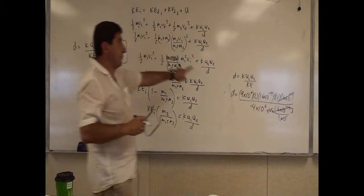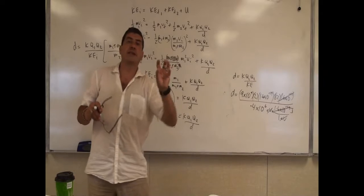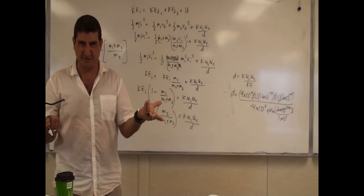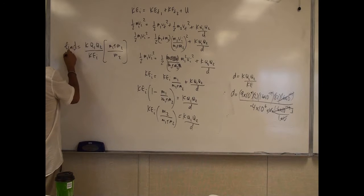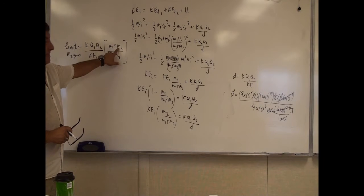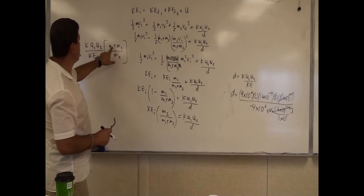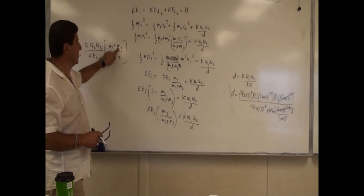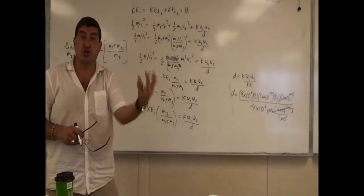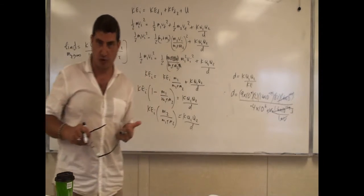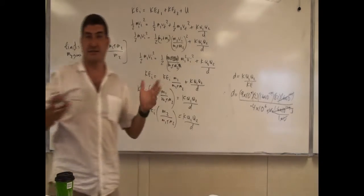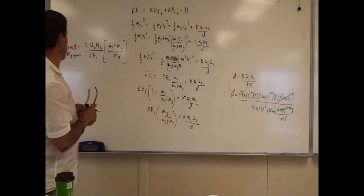This is a modified form of the first equation. The first equation works when the nucleus is bound to the atom and acts like a wall — essentially infinite mass. As M2 goes to infinity, (M1+M2)/M2 approaches 1, and the equation reduces to the simpler D = KQ1Q2/KE. When the nucleus is free to move, the factor (M1+M2)/M2 accounts for momentum transfer to the target.